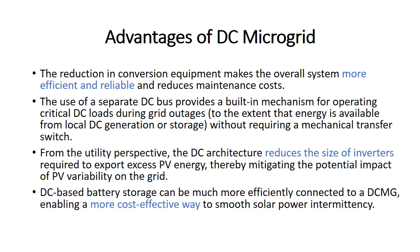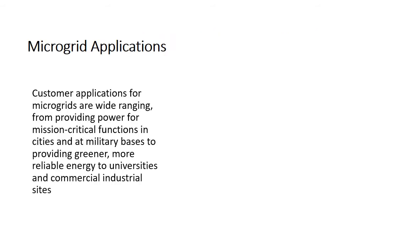DC-based battery storage can be much more efficiently connected to a DC microgrid, enabling a more cost-effective way to smooth solar power intermittency. Microgrid applications — customer applications for microgrids are wide ranging, from providing power for mission-critical functions in cities and at military bases to providing greener, more reliable energy to universities and commercial-industrial sites.